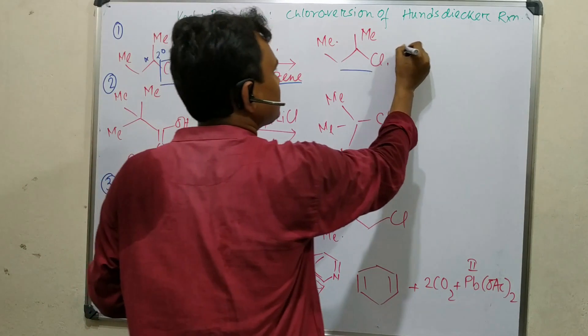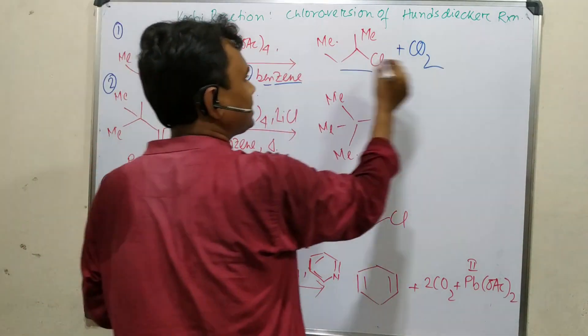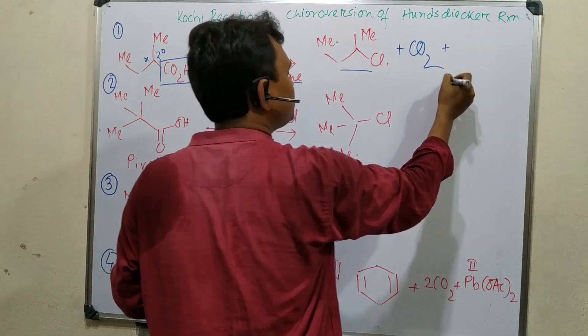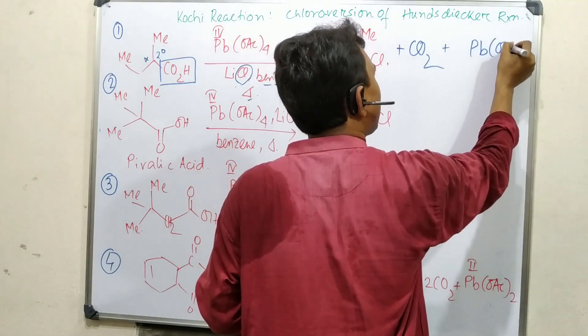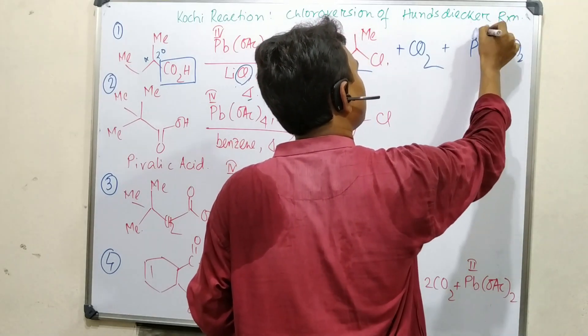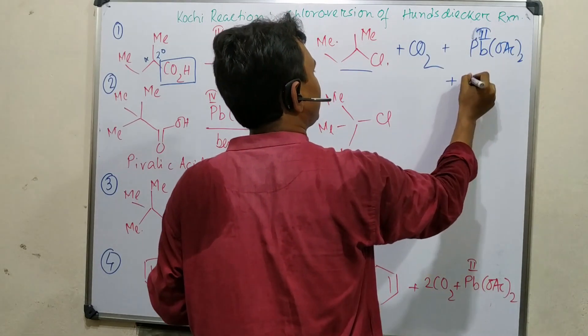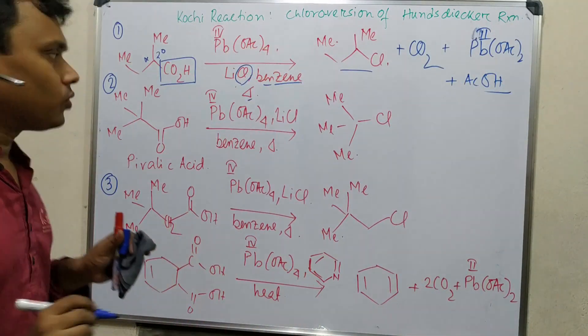Benzene is used as solvent and under heating conditions it produces this product. The carboxylic group is eliminated and alpha to this, chlorine from lithium chloride is added. Along with this, carbon dioxide is produced because of decarboxylation, and lead is converted into lead diacetate along with acetic acid.